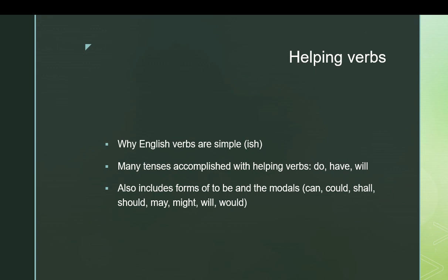We also have helping verbs, which are very common in English and somewhat common in other Germanic languages. A lot of tenses are accomplished with helping verbs. For example, English does not have a proper future tense — the verb does not undergo some kind of shift to indicate it's happening in the future; you just put the verb 'will' in front of it. 'I will love' means in the future rather than the present or past. 'Have' tends to be a helping verb with past tense verbs as well. The forms of 'to be,' especially 'being' and 'been,' do a lot of work as helping verbs, as do the modals: can, could, shall, should, may, might, will, would. The helping verbs take the infinitive form without the 'to,' or occasionally a participle form, and add themselves in front of it to add additional meaning and tense information to the verb.